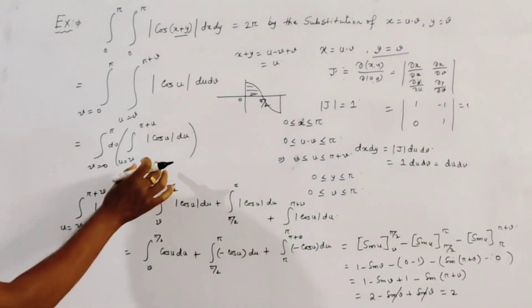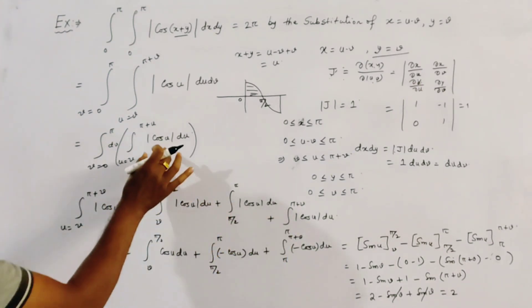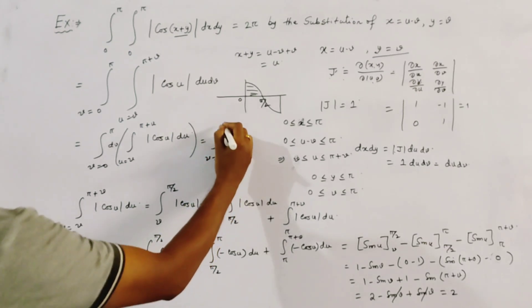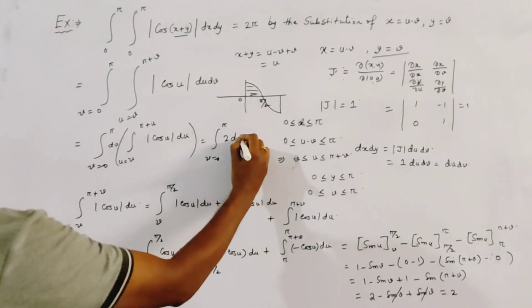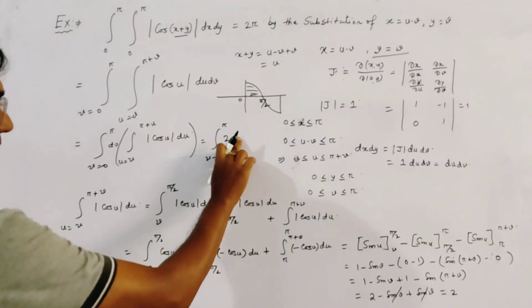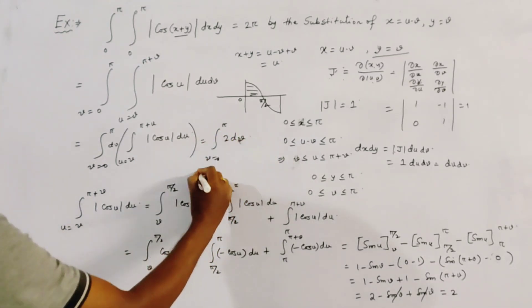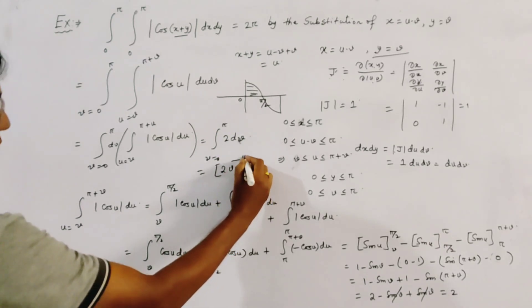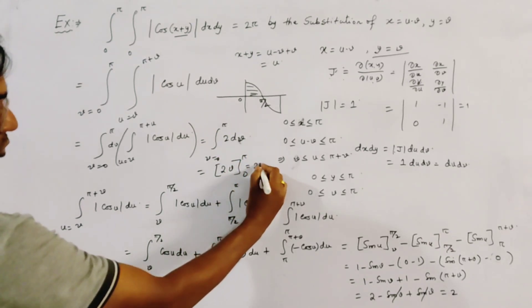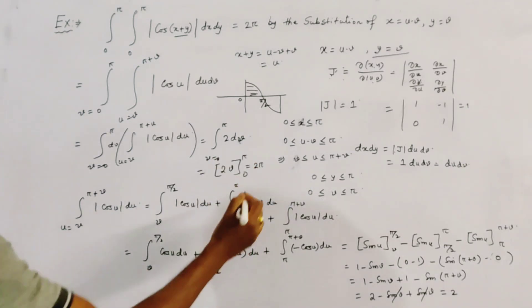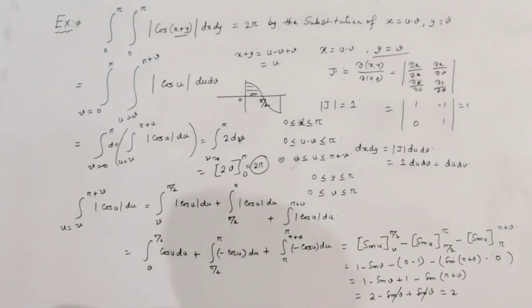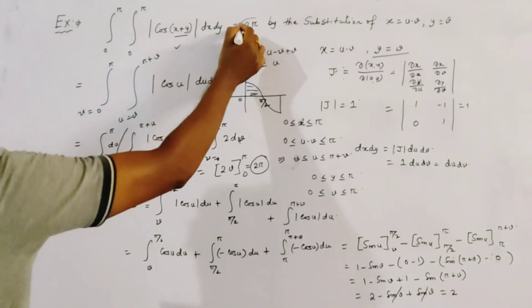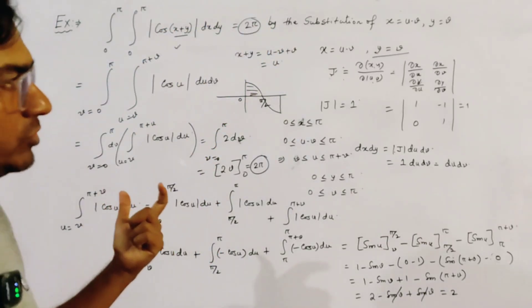Now we substitute this value of 2 into the outer integral: ∫_0^π 2 dv = [2v] from 0 to π = 2π - 0 = 2π. So the value of the double integration is 2π, and we have proved it.